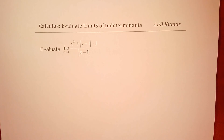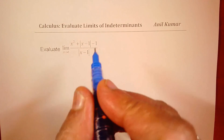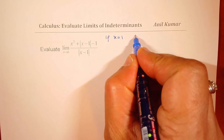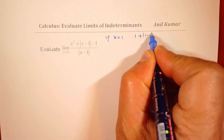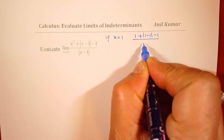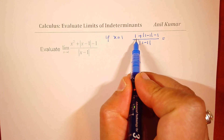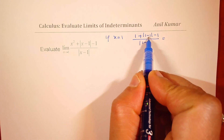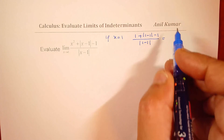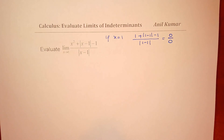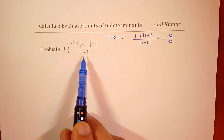Now if I substitute x equals 1, what do I get? So if x equals 1, I get 1 plus absolute value of (1 minus 1) minus 1, divided by absolute value of (1 minus 1). That gives 1 plus 0 minus 1 in the numerator, which is 0, and 0 in the denominator. So we get 0 over 0, which is indeterminate. We can solve such questions by cancelling out the common factor between numerator and denominator.